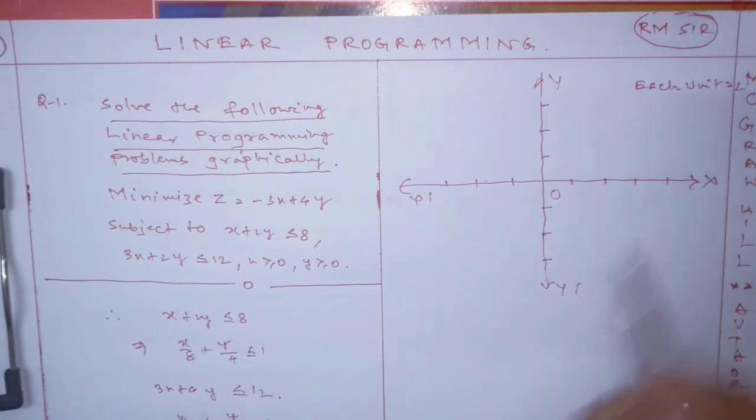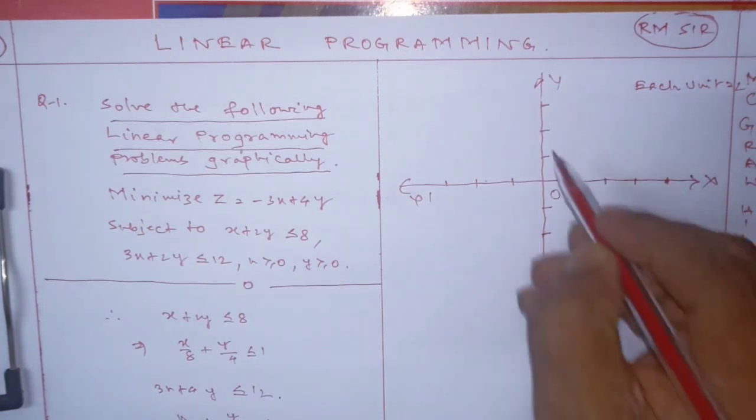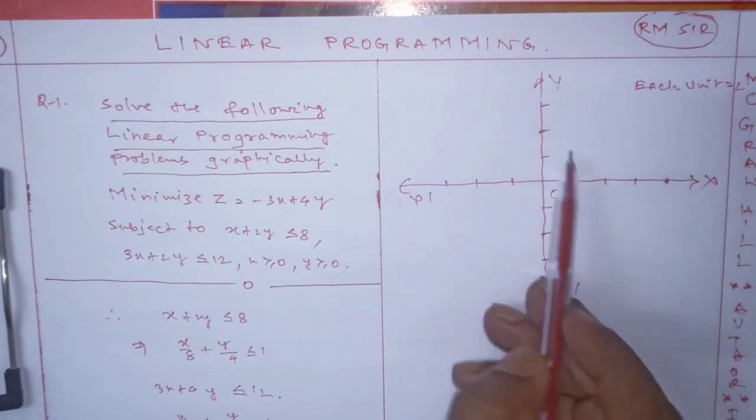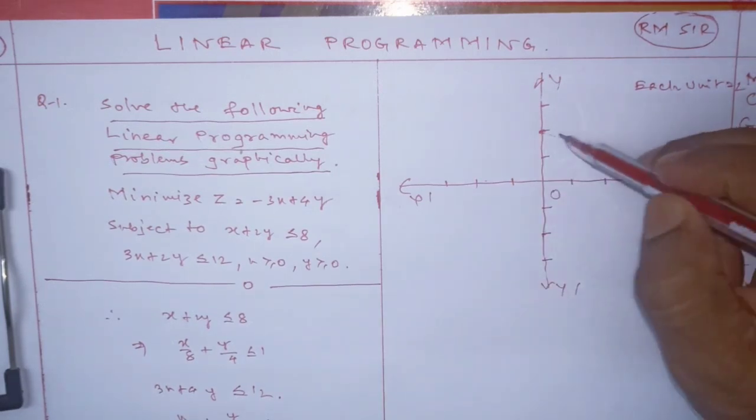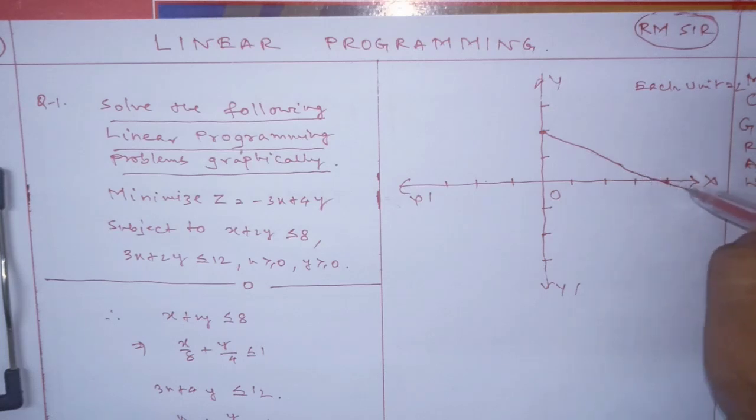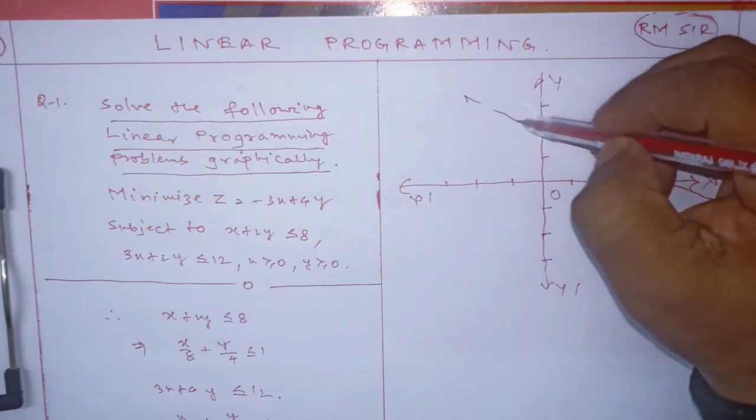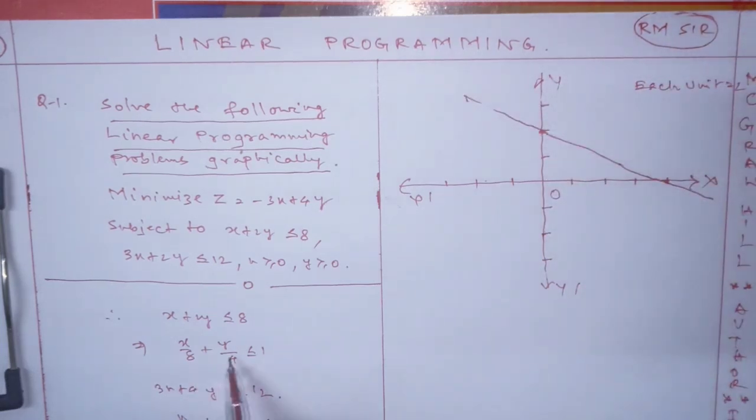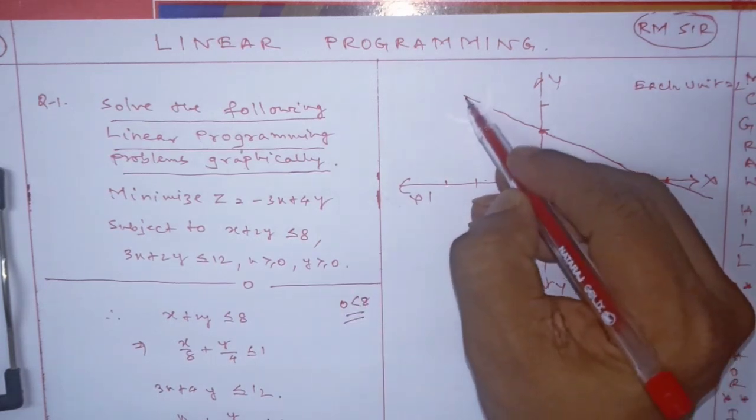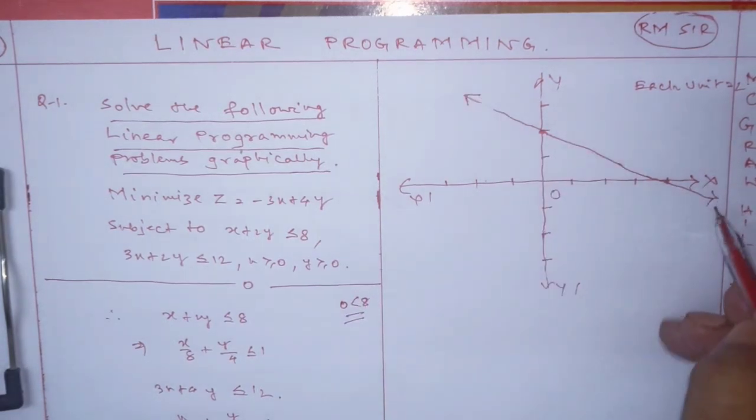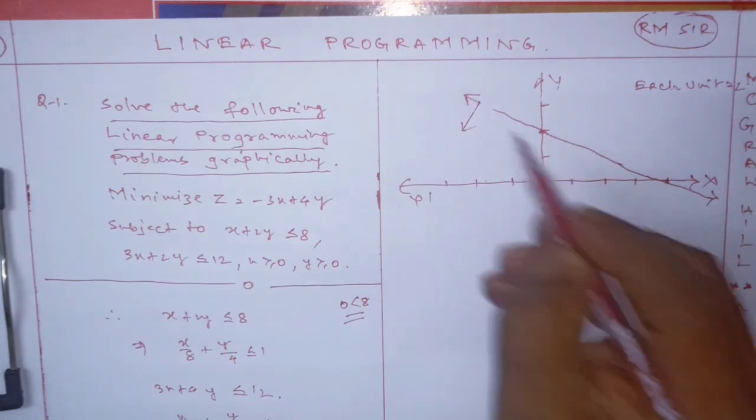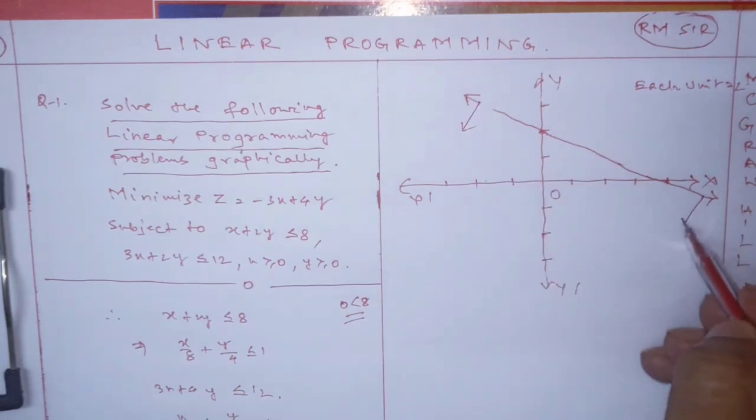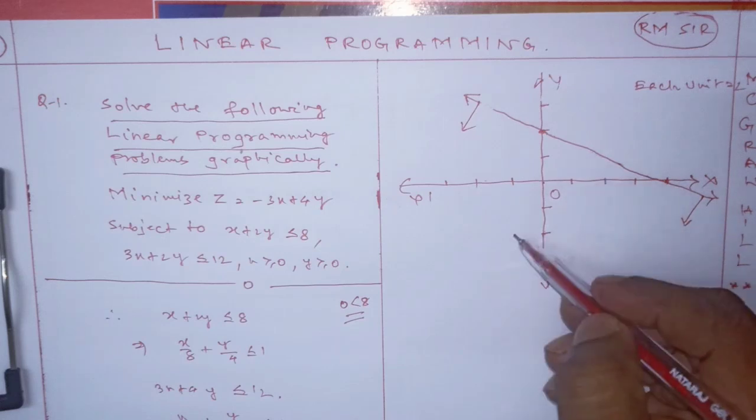Now x is 8 and y is 4. So x is 8, y is 4. Join these two points like this, and extend the line. Now put the origin here. Put 0 in place of x and 0 in place of y. So you get 0 is less than 8, the statement is true. When the statement is true, you draw the line toward the origin side. The origin is here, so toward origin.